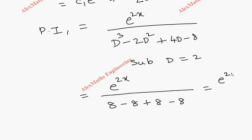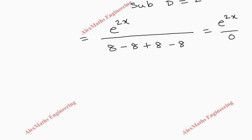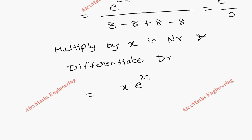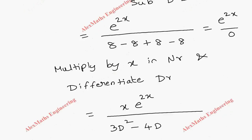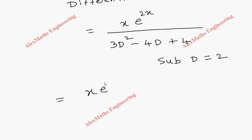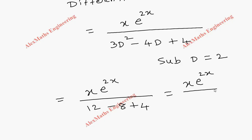All the terms in the denominator cancel and we get 0. When the denominator becomes 0, we multiply the numerator by x and differentiate the denominator. Differentiating d cubed minus 2d squared plus 4d minus 8 gives 3d squared minus 4d plus 4. Substituting d equals 2 again: 3 times 4 is 12, minus 4 times 2 which is 8, plus 4 — totally the denominator is 8. So PI1 equals x e power 2x by 8.